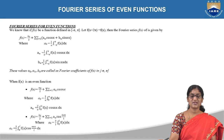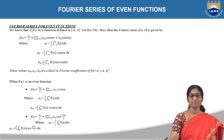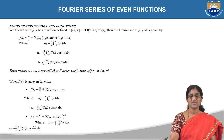Let us recapitulate the Fourier expansion of the given function f(x) in any interval. Suppose the interval is minus π to π, with f(x + 2π) = f(x). The Fourier expansion is: f(x) = a₀/2 + summation from n=1 to infinity of (aₙ cos nx + bₙ sin nx), where a₀ = (1/π) integral from −π to π of f(x) dx, aₙ = (1/π) integral from −π to π of f(x) cos nx dx, and bₙ = (1/π) integral from −π to π of f(x) sin nx dx. Here a₀, aₙ, and bₙ are called the Fourier coefficients of f(x) in the interval minus π to π.